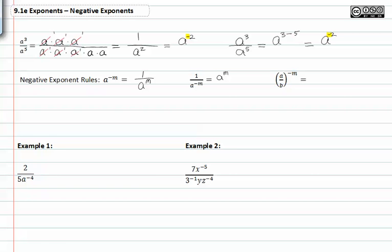And lastly, if we have a negative exponent outside parentheses, we distribute that exponent to each exponent inside parentheses in both the numerator and denominator. And we end up with a to the negative m over b to the negative m.